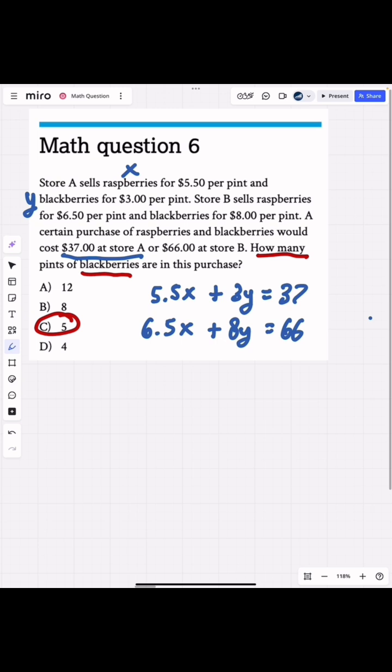One thing you have to be really careful of with that answer choice D - they're trying to trick you here. That's actually going to be the number of raspberries. So you have to be really careful not to confuse x and y.